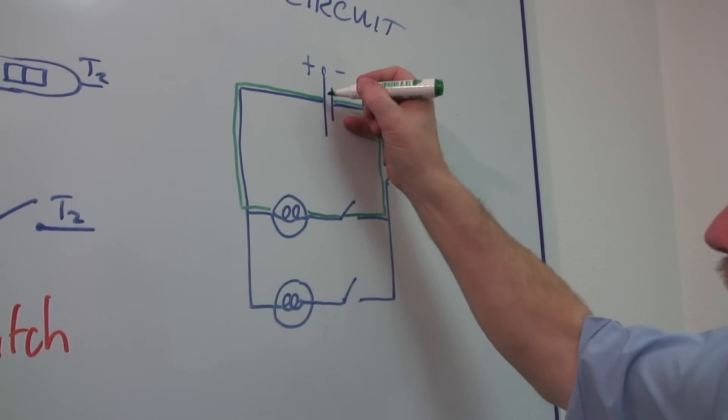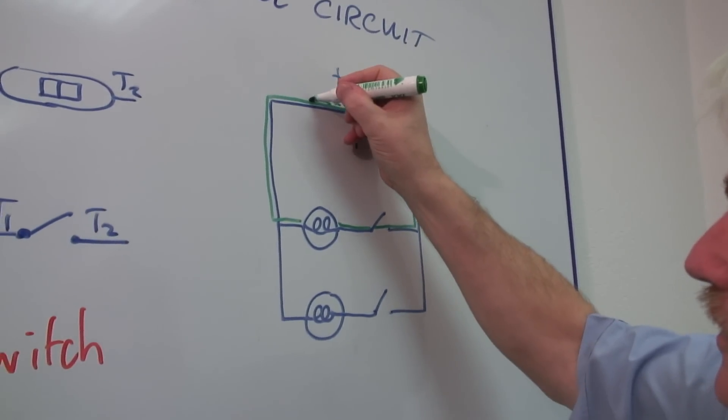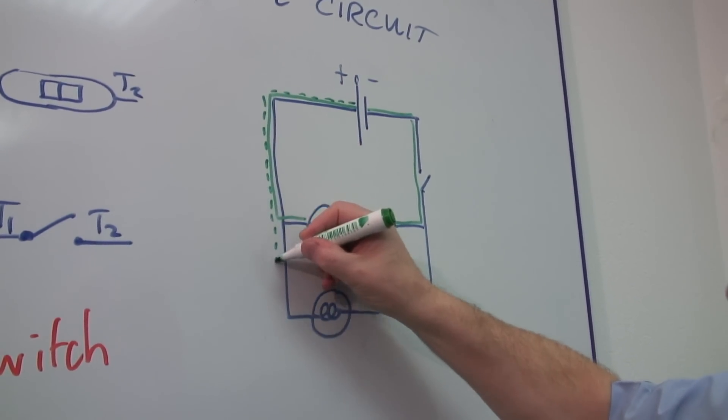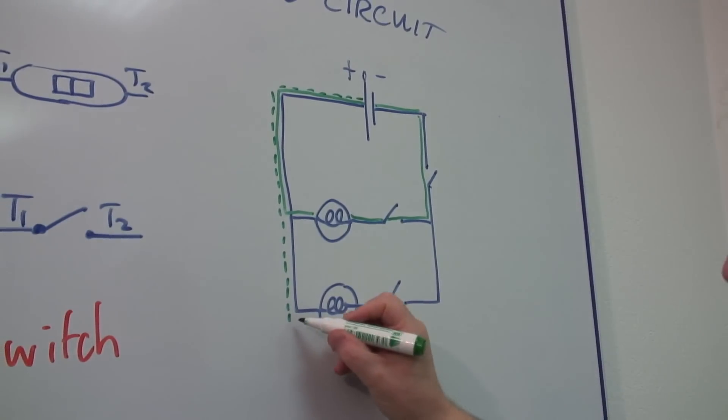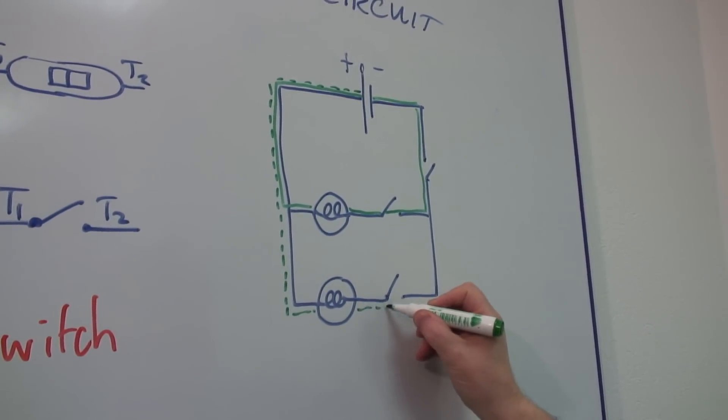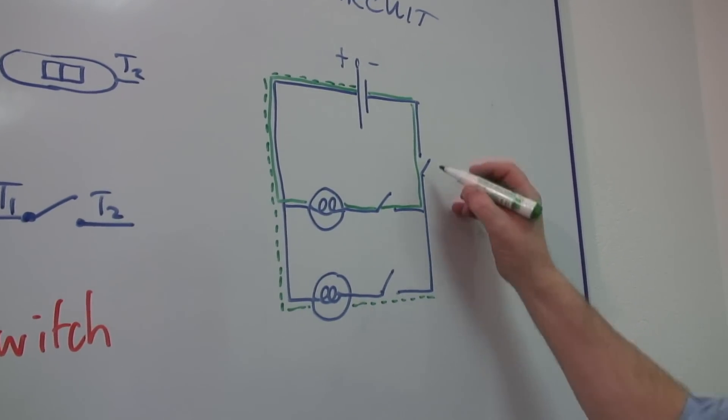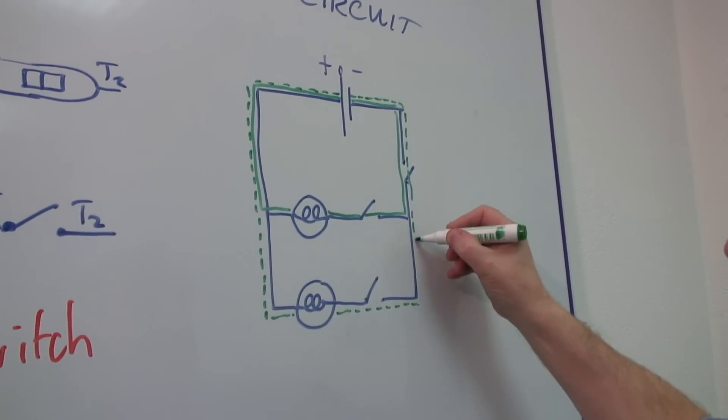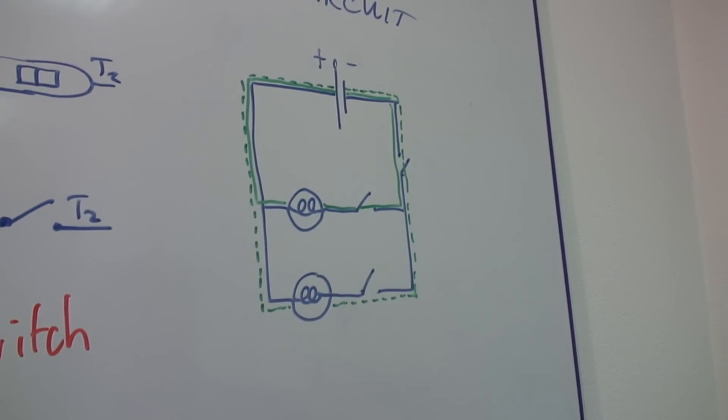Now if I now, with a dotted line, follow my second circuit, you can see that I don't go through that lamp, I go through this lamp. But the dotted line is creating exactly the same circuit. It's another series circuit.